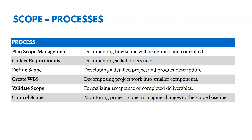In collect requirements, we're documenting our stakeholder needs, figuring out what they want. Then we're going to define scope, developing a detailed project and product description — sometimes just a few paragraphs. Then we take that scope and break it down, decomposing that project work into smaller components to make it easier to manage. That's creating the WBS.